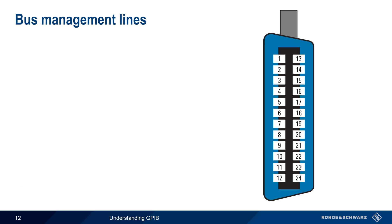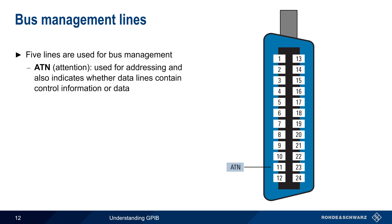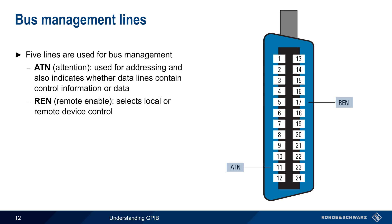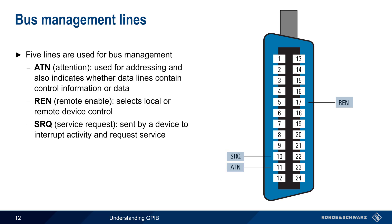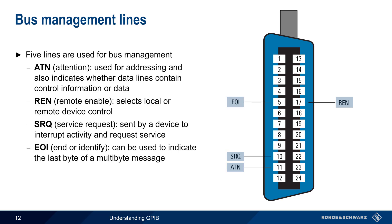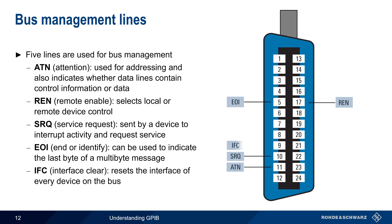Five of the active lines are used for managing the GPIB bus. The ATN or attention line is used to address devices, and is also used for indicating whether the data lines contain control information or data. REN selects local or remote device control, and SRQ is used by devices that wish to interrupt activity and request service. The EOI line is one of the ways of indicating the end of a multibyte message. And finally, Interface Clear can be used to reset the interface of every device on the bus, returning the bus to a known stable state.